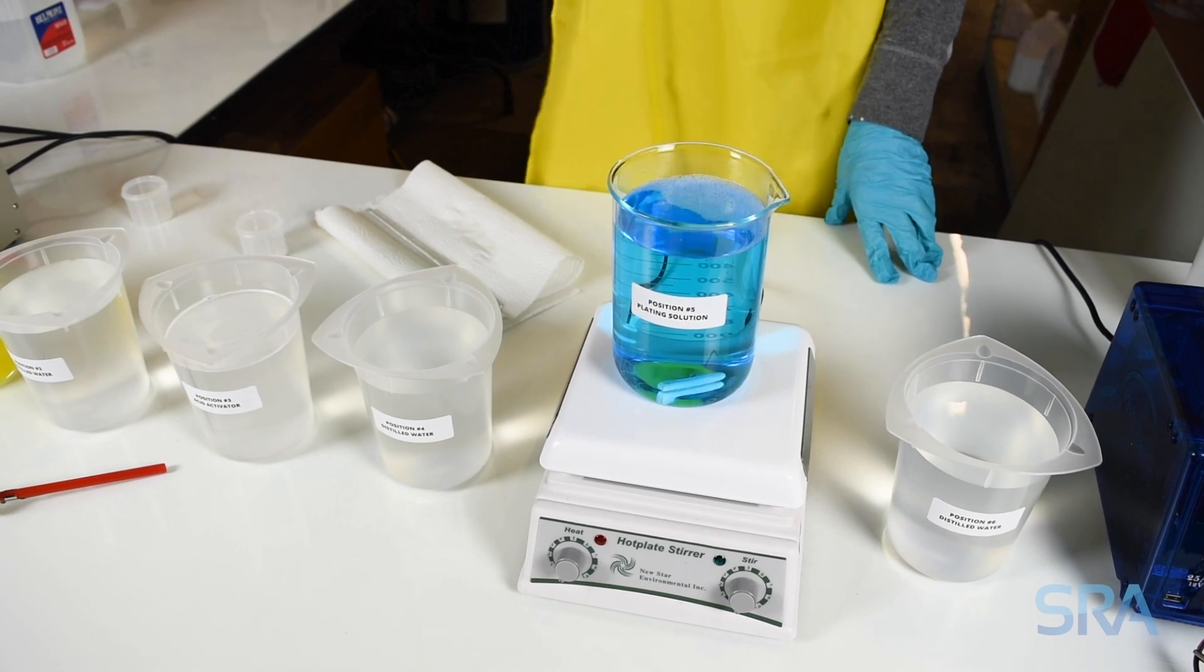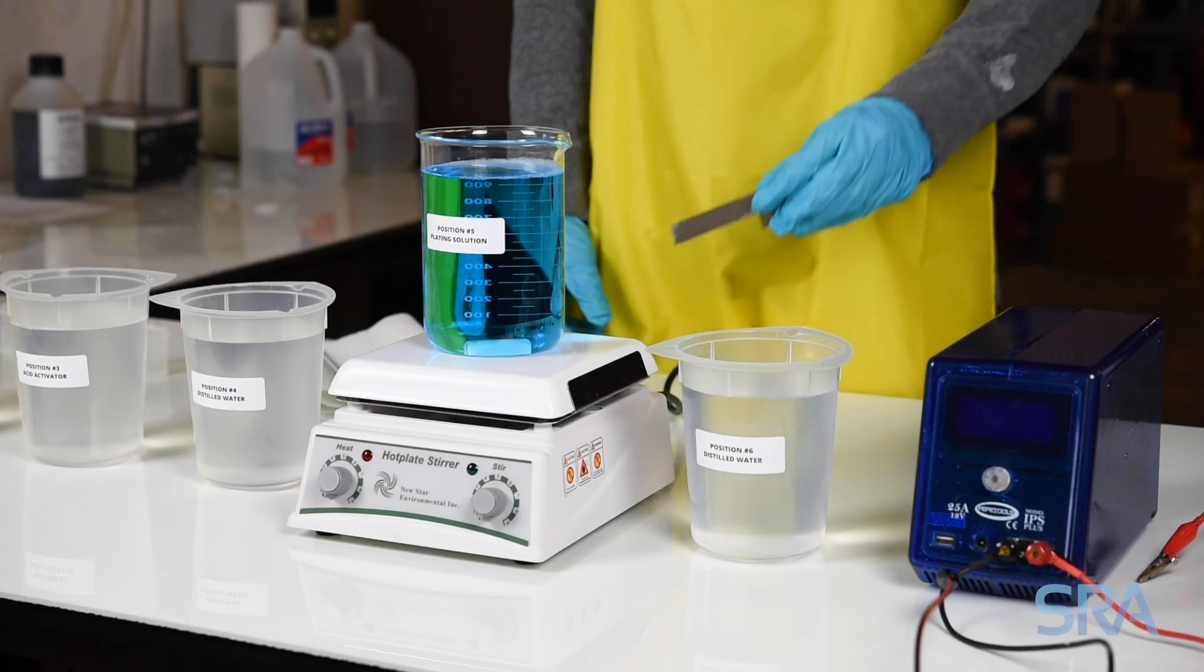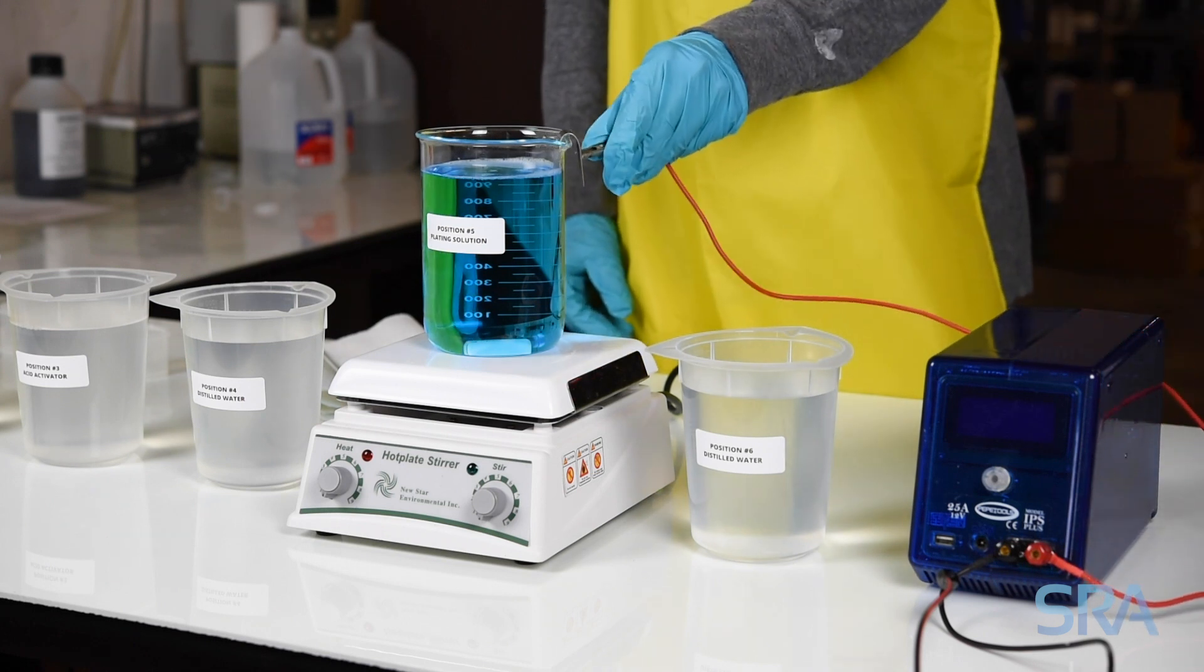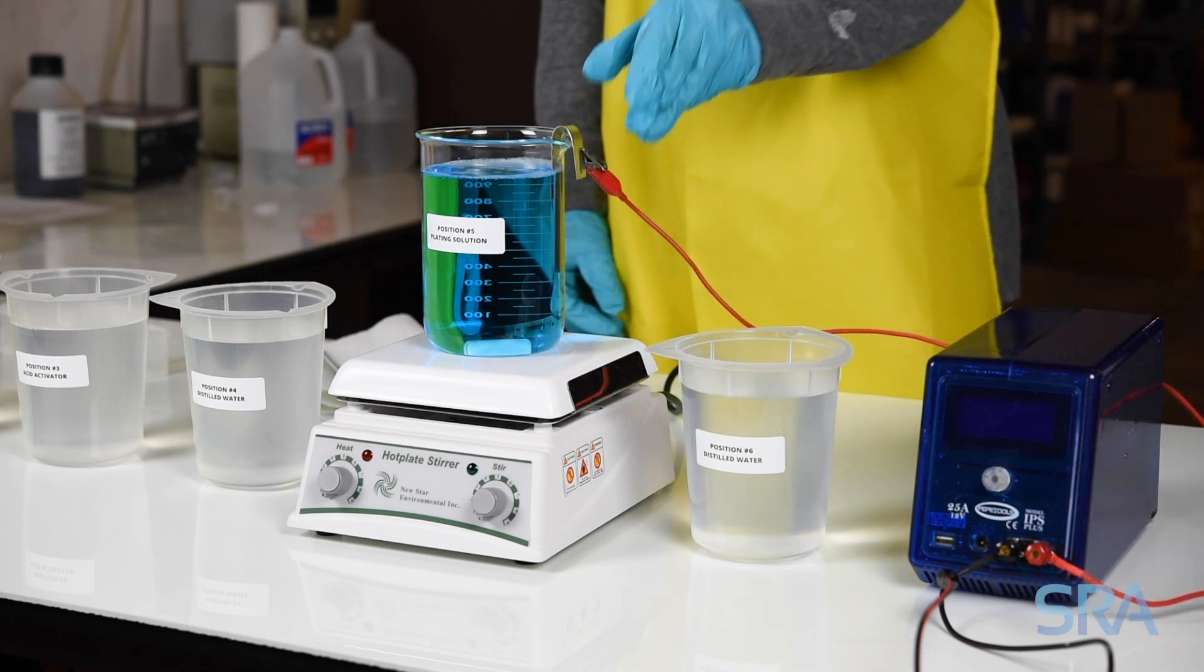Next drop in the magnetic pellet for stirring and install the correct anode for your plating solution. Now connect the positive lead of your second rectifier to the anode.